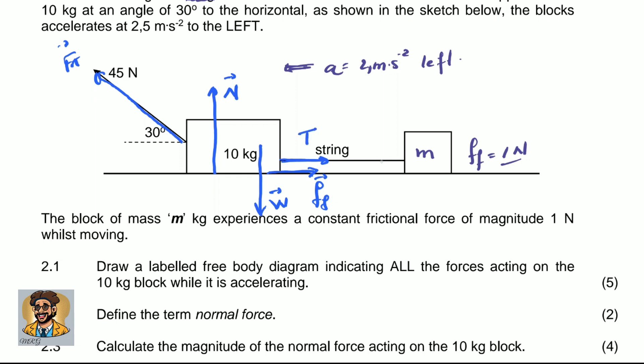On the other block M, we have tension pointing to the front, the normal force, weight, and the frictional force. Those are the forces acting on both blocks. Now we can go and draw the free body diagram for the question they're asking.